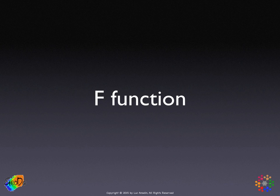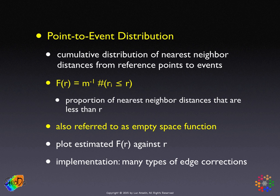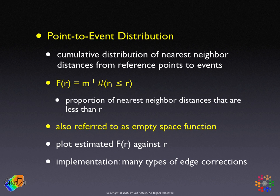We now turn to the F function, which is an alternative to the G function. Instead of using the event-to-event distribution, it focuses on the point-to-event distribution. The F function is a summary of the characteristics of the nearest neighbor distances between reference points to actual events.